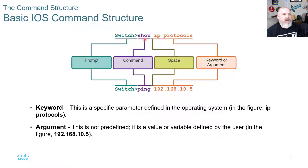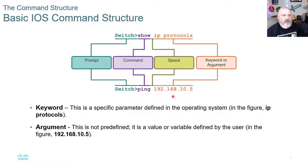The command structure consists of a prompt, followed by the command, a space — spacing is important — and then the keyword or argument. For example, at the switch prompt you type 'ping' followed by a space and then the IP address. To ping an IPv4 address you would type: 'ping 192.168.10.5' and it will execute the ping command on that address.